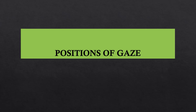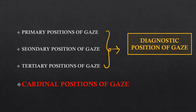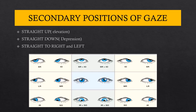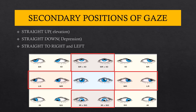The positions of gaze include primary, secondary, and tertiary positions — together called the diagnostic positions of gaze — plus the cardinal positions. The primary position is when the eye fixates on a distant object straight ahead with the head erect. From primary gaze, moving straight up, down, right, or left forms a cross — these are the secondary positions: elevation, depression, levoversion, and dextroversion.